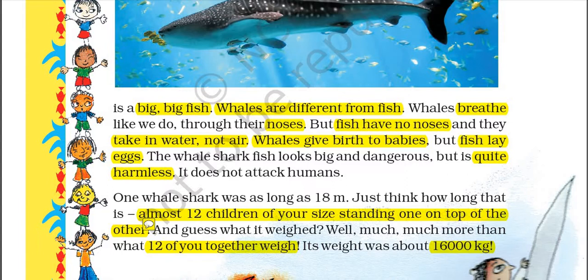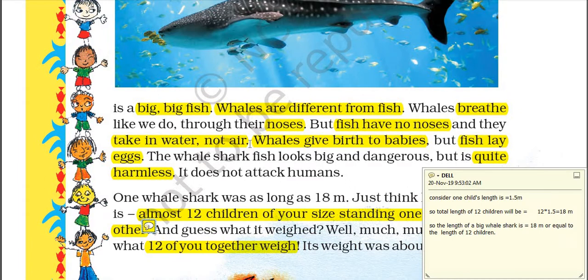The whale shark looks big and dangerous, but they are very quiet and very harmless — they do not attack humans, which is very good news for us. One whale shark was as long as 18 meters. Consider one child's length is 1.5 meters, so total length of 12 children = 12 × 1.5 = 18 meters. So the length of a whale shark equals the length of 12 children standing together.